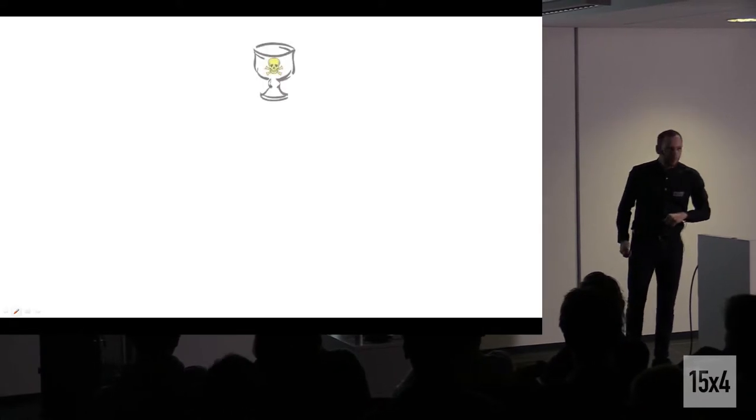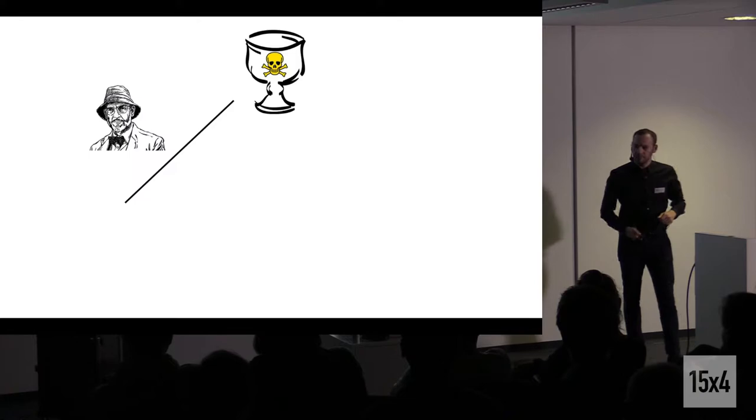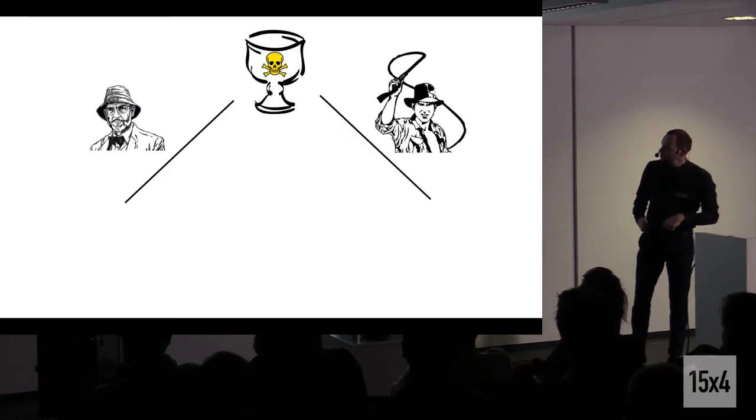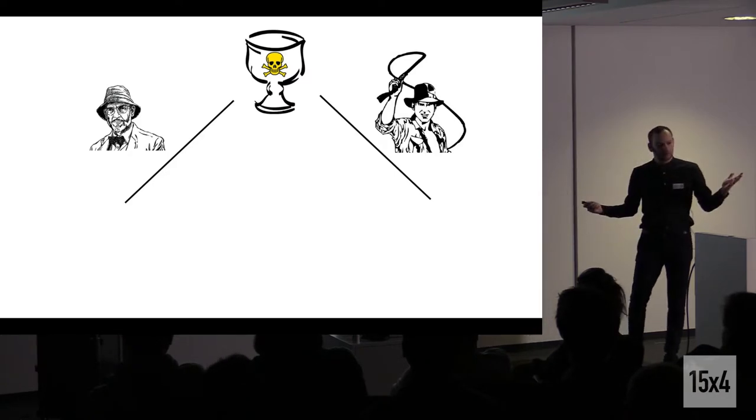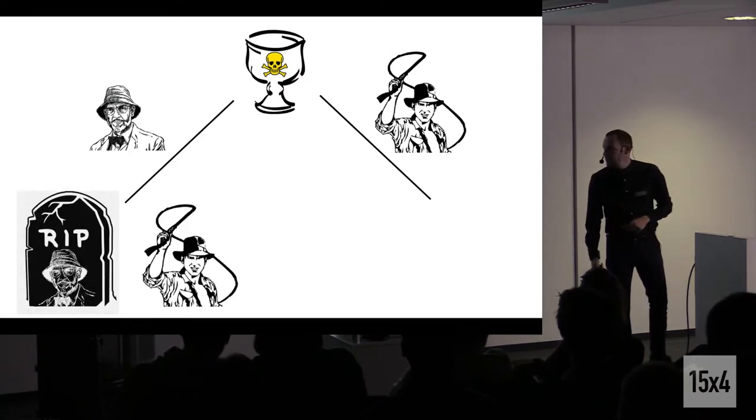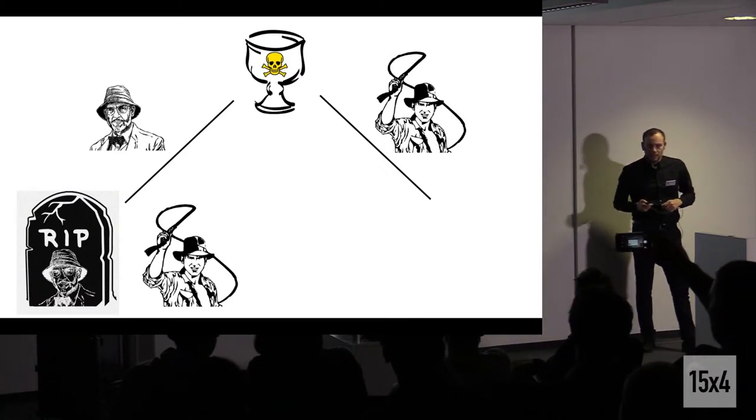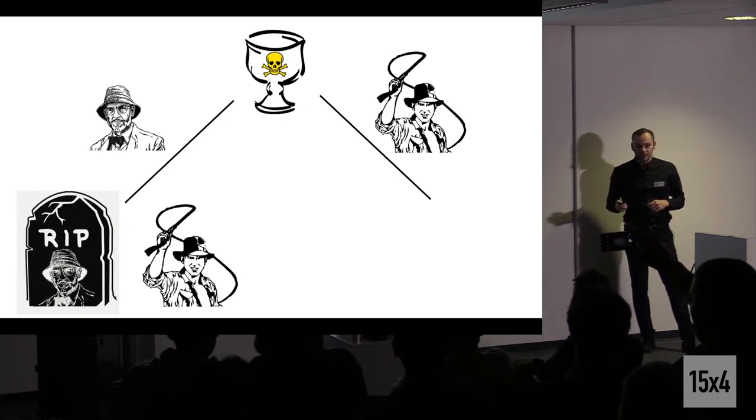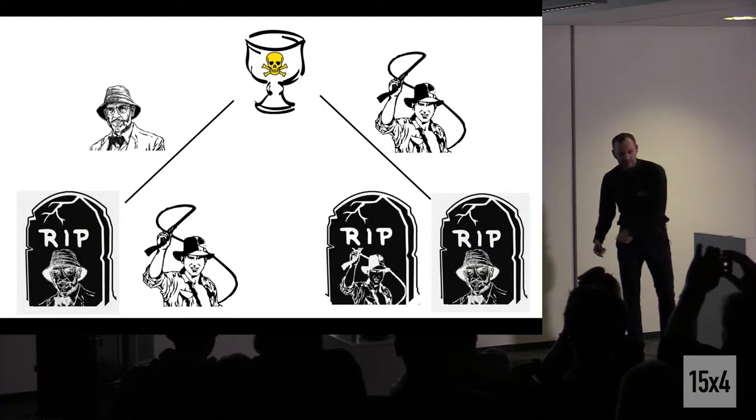Well, in this case it works. But what if the cup was false? So he has two choices actually: to give the cup first to his father or to drink it first himself. So what happens if the father drinks the poisoned cup first? He will die unfortunately, but Indy will stay alive in this case. And what if it's Indy who drinks first the poisoned cup like in the movie? He will die, and his father will die because he is starving.